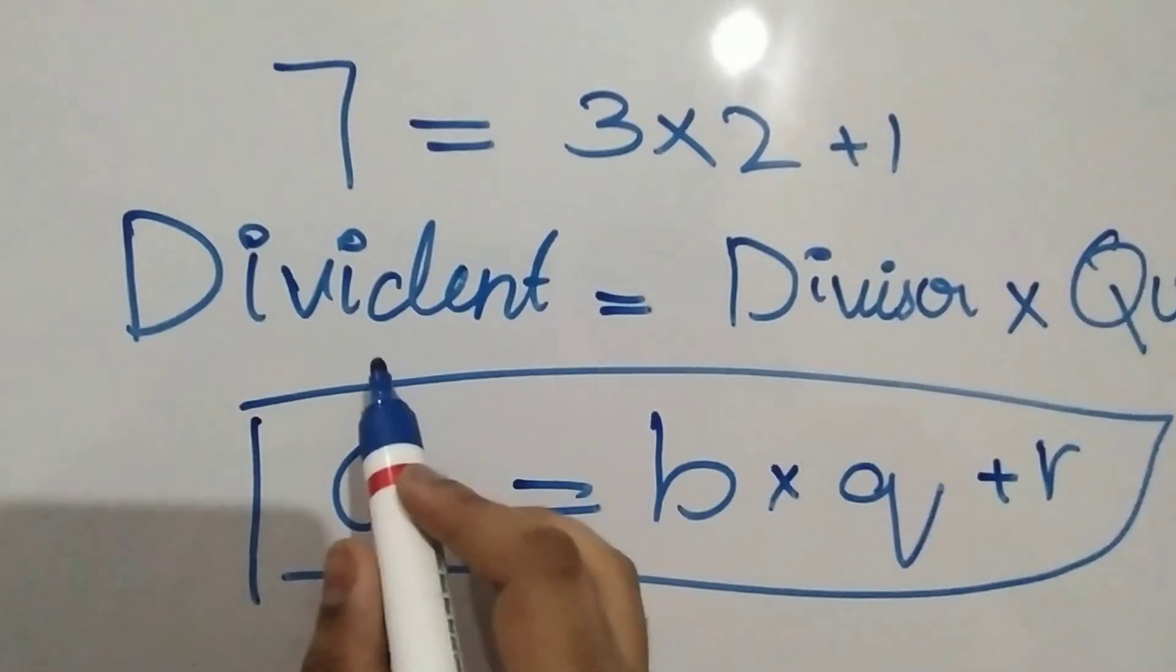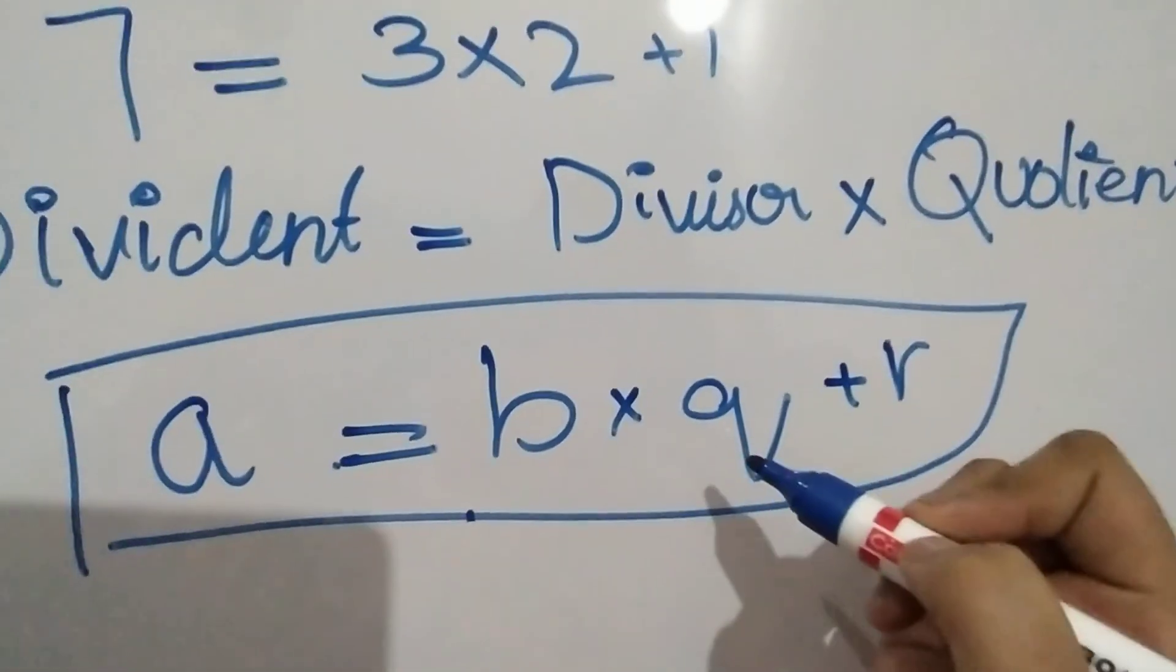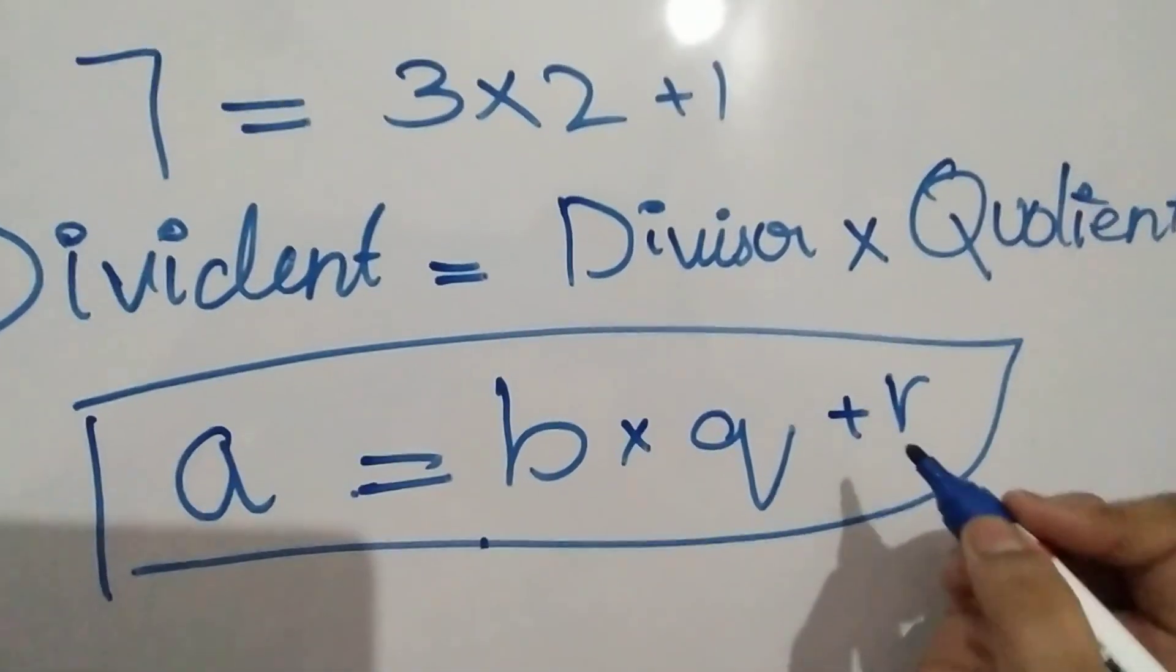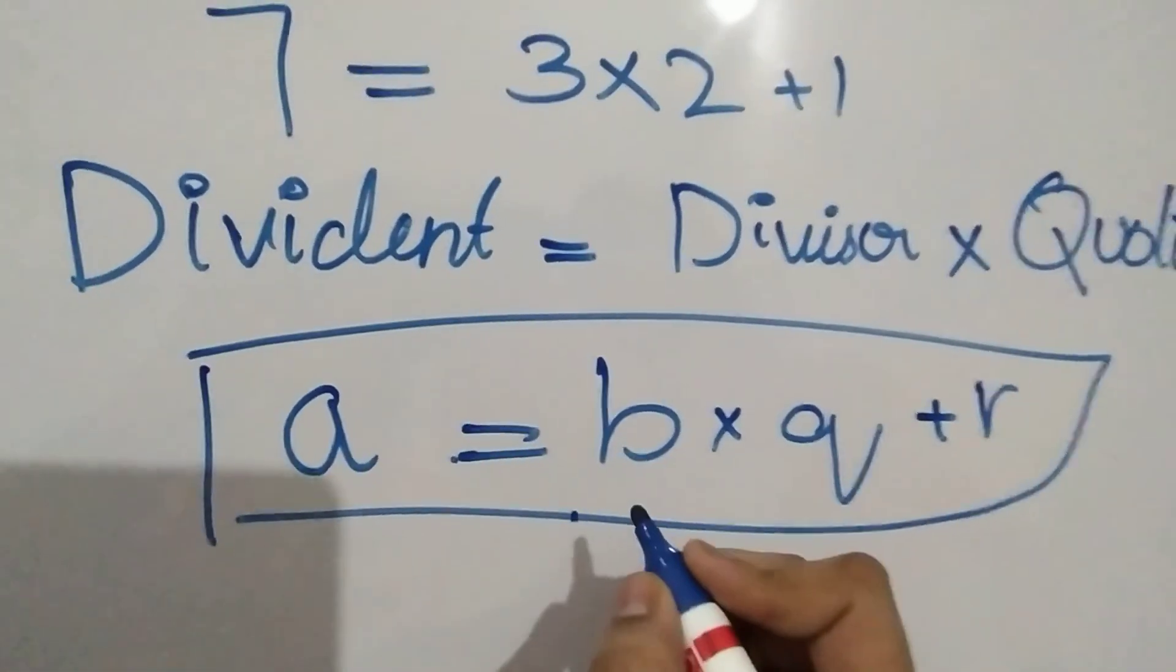So I am going to write dividend as A, divisor as B, quotient as Q and remainder as R. This is called the variable based representation.